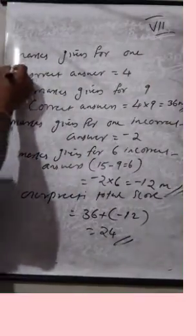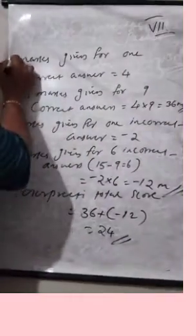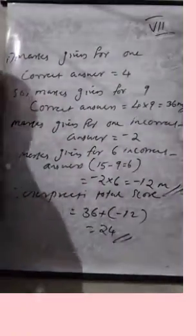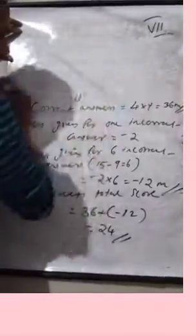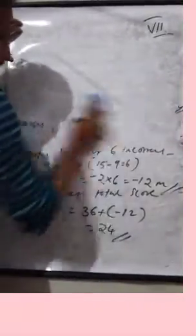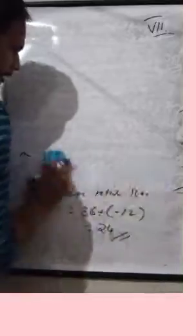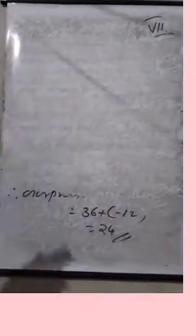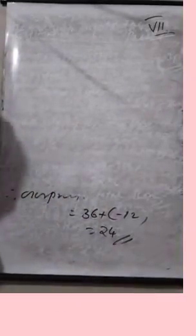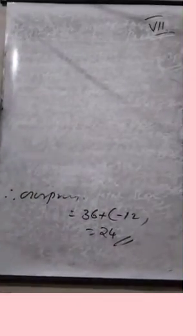This is the first question answered. Now the second question: one of her friends gets 5 correct answers.